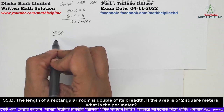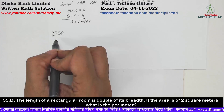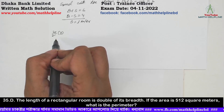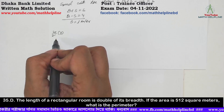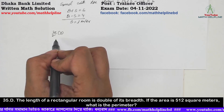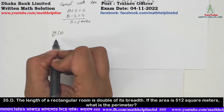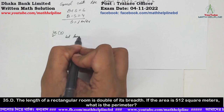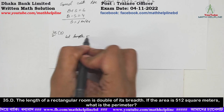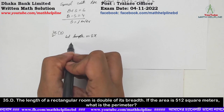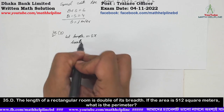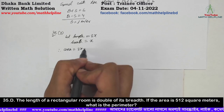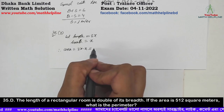The length of a rectangular room is double its breadth. If the area is 512 square meters, what is the perimeter? Let length equal to 2x and breadth equal to x. Area = 2x times x = 512.